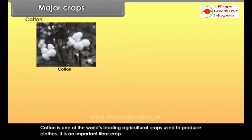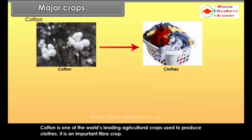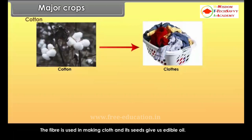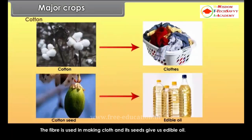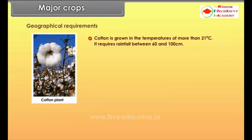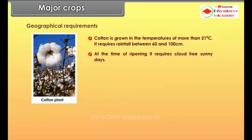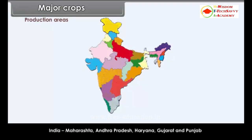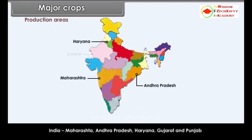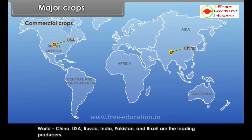Cotton is one of the world's leading agricultural crops used to produce clothes. The fiber is used in making cloth and its seeds give us edible oil. Cotton is grown at temperatures of more than 21 degrees Celsius and requires rainfall between 60 and 100 centimetres. At the time of ripening, it requires cloud-free sunny days. Alluvial and black soils are best suited for its cultivation. Major producing states in India include Maharashtra, Andhra Pradesh, Haryana, Gujarat and Punjab. World producers include China, USA, Russia, India, Pakistan and Brazil.